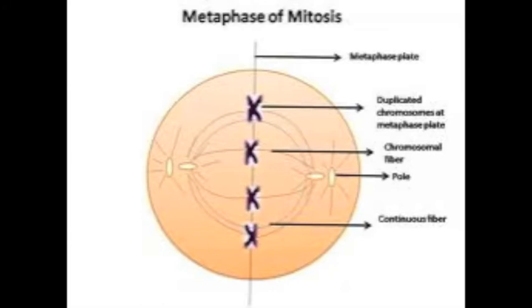And I know metaphase. By this point, the nuclear envelope is fully disintegrated and the spindle fibers attach to the kinetochores of each sister chromatid. Here, chromosomes line up halfway between each pole, called the metaphase plate, and prepare to be pulled in.